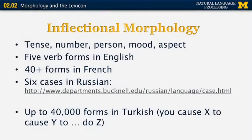Now let's look at inflectional morphology, one of the main areas of morphology. Words can have different inflections based on tense — present, past, and future — number, person (first, second, third), mood such as indicative, subjunctive, and conditional, and aspect, for example progressive and perfective.